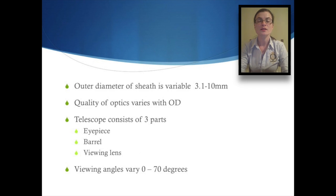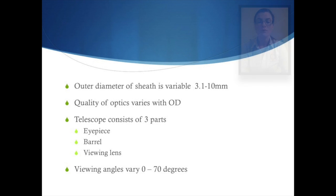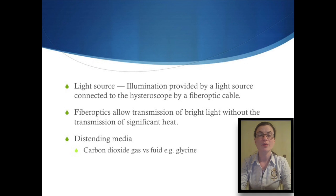It consists of an outer sheath or metal tube which surrounds channels for the telescope, distending media inflow and outflow, and operative instruments. Illumination is provided by a light source which is connected to the hysteroscope by a fibre optic cable.